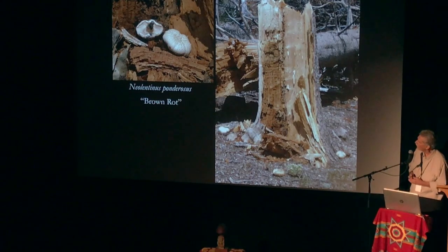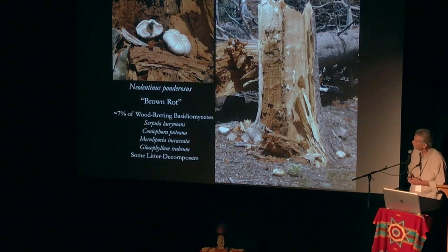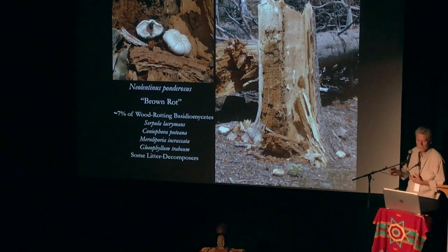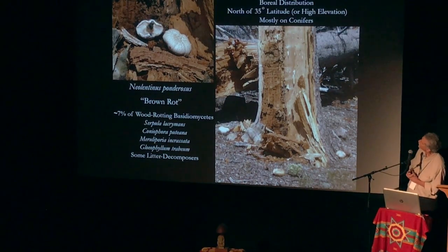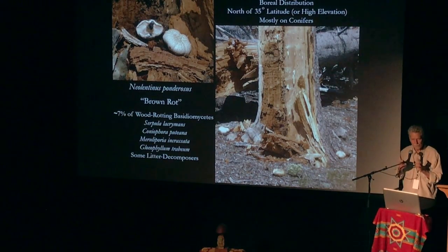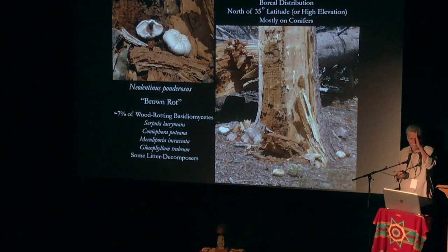Here's our brown rot on a fir tree in the Sierra — I'm from California. You can see those big train-wrecker mushrooms all over the bottom. It's about 7% of all the wood rotters. And Serpula lacrymans — that's the classic dry rot of homes. Interestingly, these brown rots are mostly boreal, above about 35 degrees latitude, or high elevation. If you go on the equator and climb a mountain, you'll find brown rots at the top of the mountains there too. And mostly on conifers.